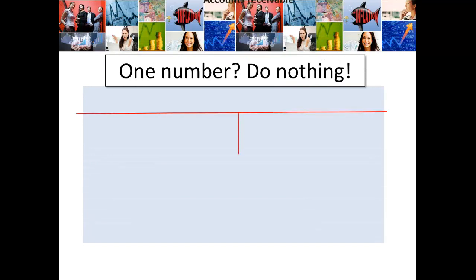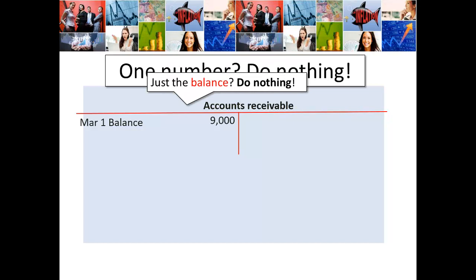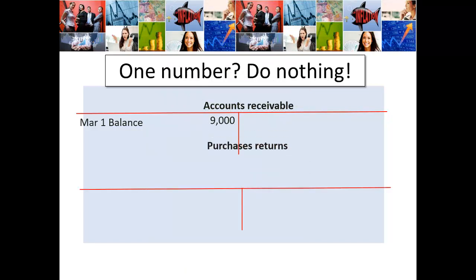One more thing: if there's just one number in the account — nothing has been done in that account over the course of the time period, usually a month — we do nothing. It doesn't involve a balance; just leave it as it is. So one number, do nothing — that's the rule. If an account starts with a balance and there are no transactions at all during that period, we leave it. If it's a new account with no opening balance and just one transaction entered, same rule: one number, do nothing. Leave it as it is.